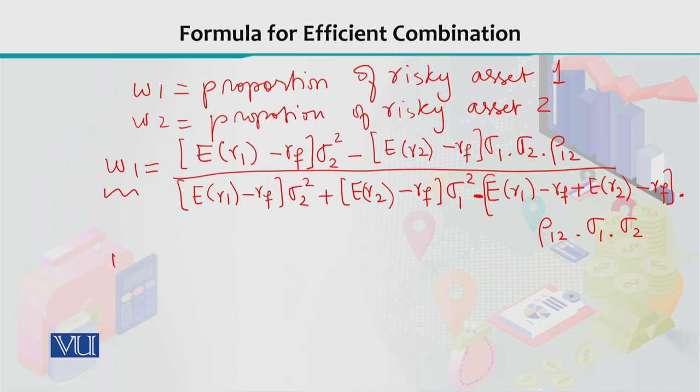The next thing is W2, which is the proportion of risky asset two — how much of the total investment you are going to invest in risky asset two. That can simply be obtained by subtracting W1 from 1. So W2 = 1 − W1.